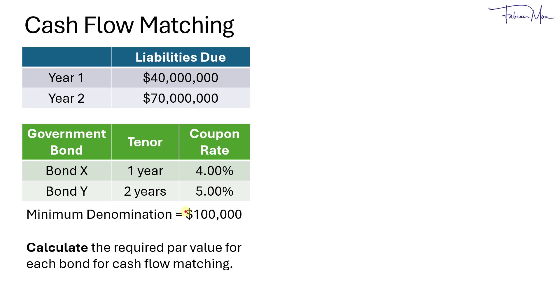We will always start with the longest maturity which is in 2 years. To calculate the par value of bond Y which matures in year 2, the equation that we'll use is the par value of bond Y plus the coupon of bond Y in year 2. And the total cash flow in year 2 must be equal to the liability which is $70 million.